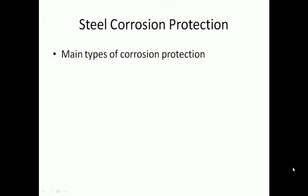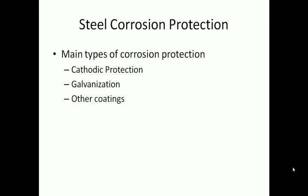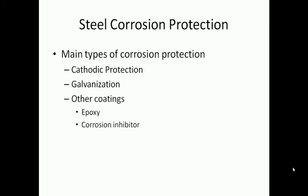Corrosion protection of steel structures in marine environments is very important to the longevity of the structure. Several different types of corrosion protection are available. Three main types include cathodic protection, galvanization, and other chemical coatings including epoxy and corrosion inhibiting chemicals.